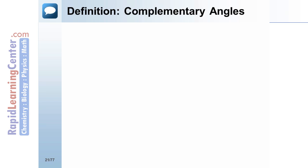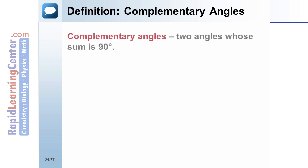Definition: Complementary Angles. Complementary angles are two angles whose sum is 90 degrees. In the figure, angles 1 and 2 are complementary angles.